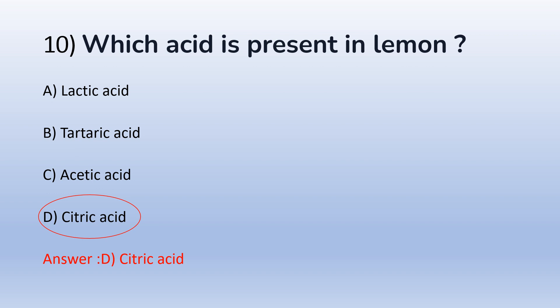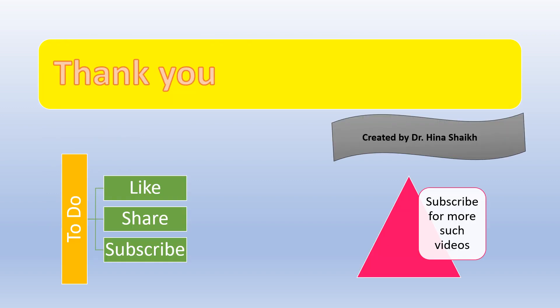The correct answer is D, Citric acid. Lactic acid is present in milk and curd. Tartaric acid is present in grapes. Acetic acid is present in vinegar. Ascorbic acid is present in amla. Ascorbic acid is also called as vitamin C.